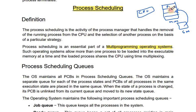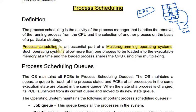Suppose there is program 1, program 2, program 3, program 4 — these are what we are going to execute. The operating system determines how to execute them. In a multi-programming operating system, more than one process needs to be loaded into the memory, and these loaded processes share the CPU using time multiplexing.